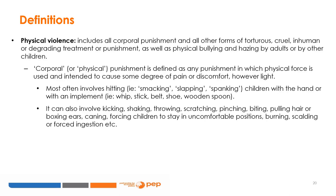Physical punishment can also include kicking, shaking, or throwing children, scratching, pinching, biting, pulling hair or boxing ears, caning, forcing children to stay in uncomfortable positions, burning, scalding, or forced ingestion, depending on the context or the perpetrator.